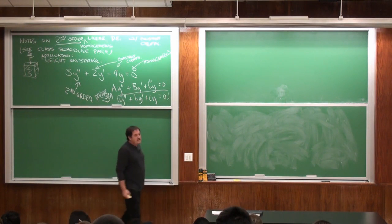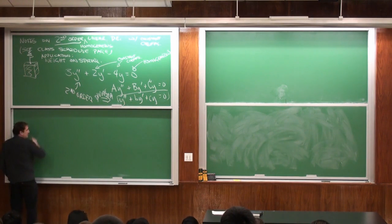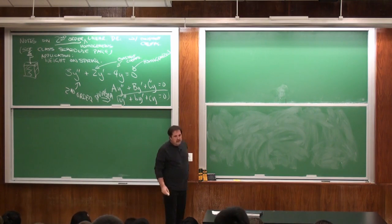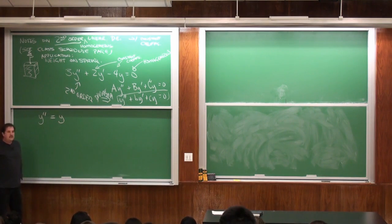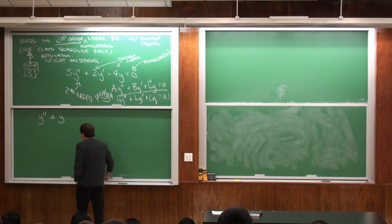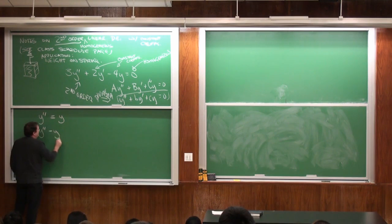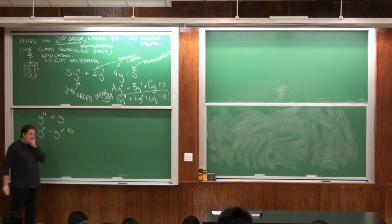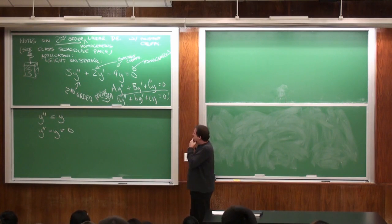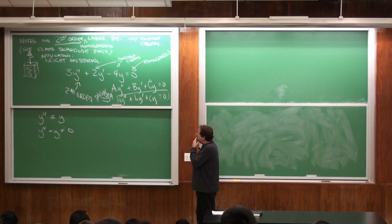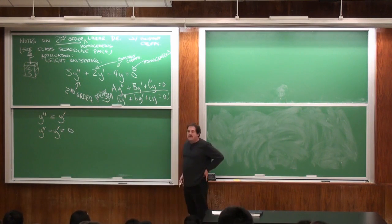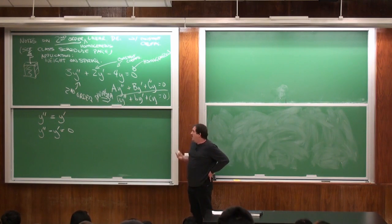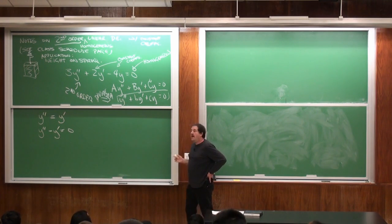Let me start with a fairly easy example: y'' equals y'. This is the same as y'' minus y' equals zero. What would you think a solution looks like? A guess — e to some power. So if I guess e to the kx, let's see what that tells me.